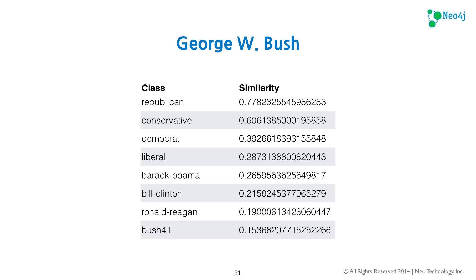Moving to George W. Bush, Bush 43, we see Republican and Conservative at the top. We can see how far Republican is from Democrat — which is pretty far. Interestingly, George W. Bush is most like Barack Obama according to the speech transcripts, which is probably because the vocabulary and grammar have evolved over time. What's notable here is that Bush 41 was farthest away from Bush 43 — clearly Bush 43 was trying to set himself apart from his father.